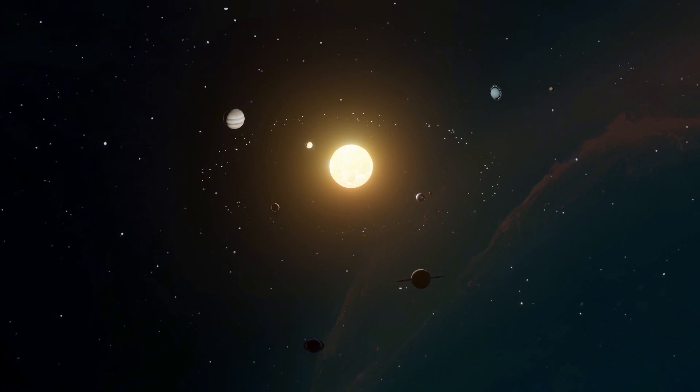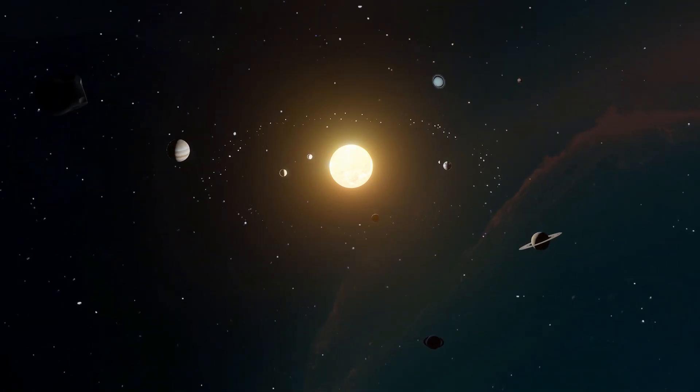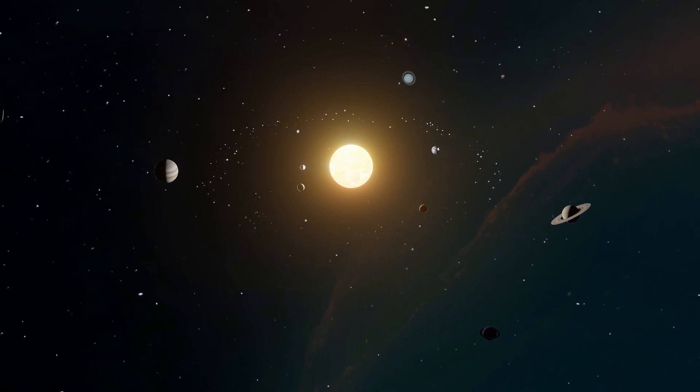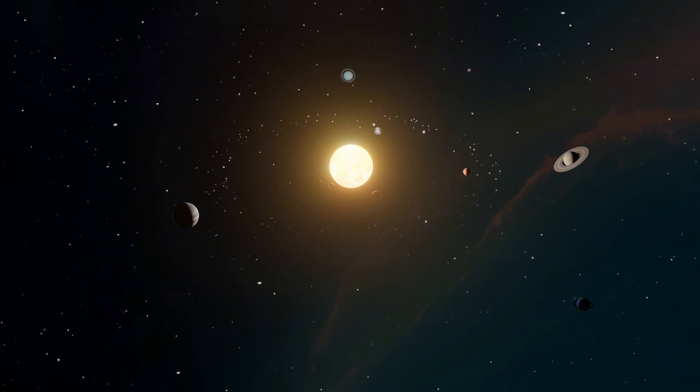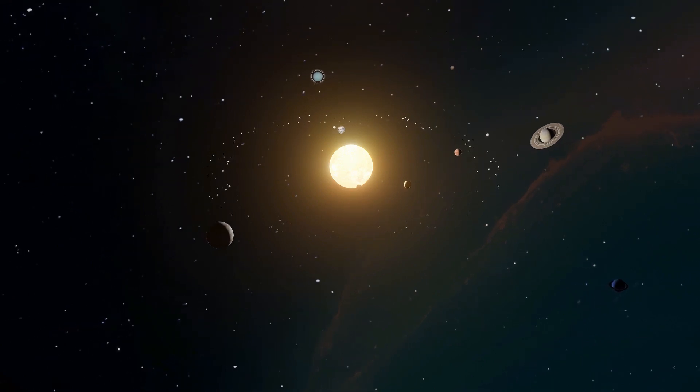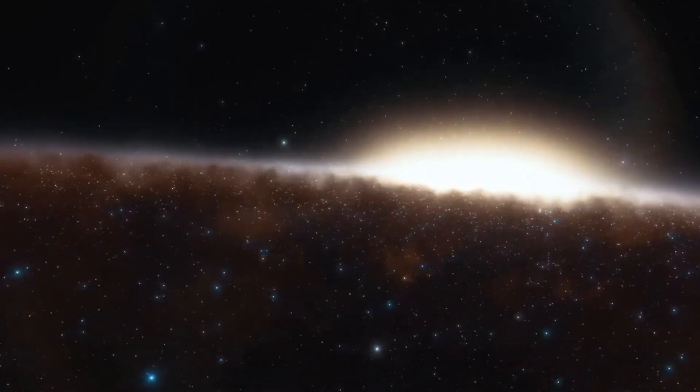For example, our solar system will likely be flung somewhere completely new compared to its current position. But Earth itself will be essentially unharmed by the cosmic merger. On the other hand, gravitational disturbances can destabilize entire star systems. For instance, outer planets might get ejected from their solar systems if mergers jostle their delicate orbital balance.